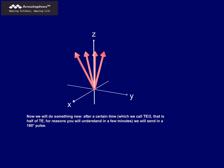Now we will do something new. After a certain time, which we call TE divided by 2, that is, half of TE, for reasons you'll understand in a few minutes, we'll send in a 180-degree pulse.